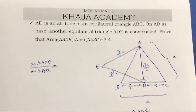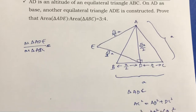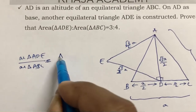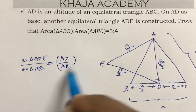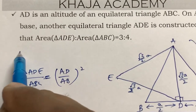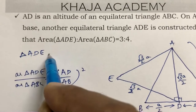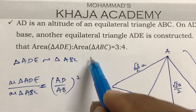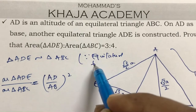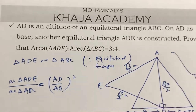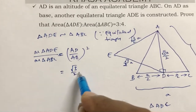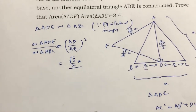By the areas theorem, the ratio of the areas of two similar triangles equals the ratio of the squares of their corresponding sides. So area of triangle ADE / area of triangle ABC = (AD / AB)². I am applying this because both triangles are equilateral, so triangle ADE is similar to triangle ABC. AD is (√3/2)A and AB is A.